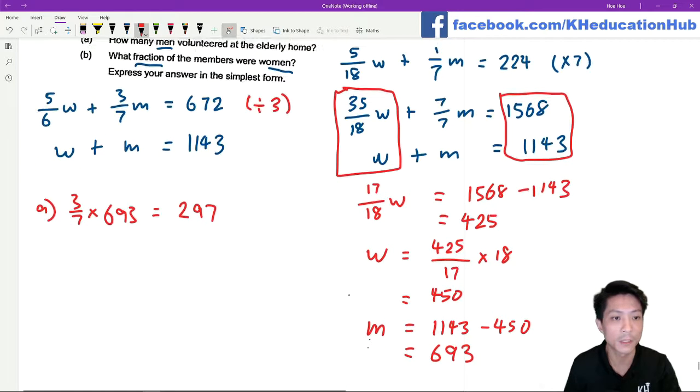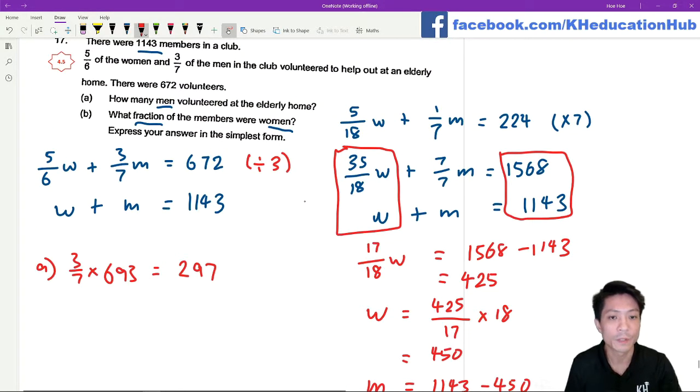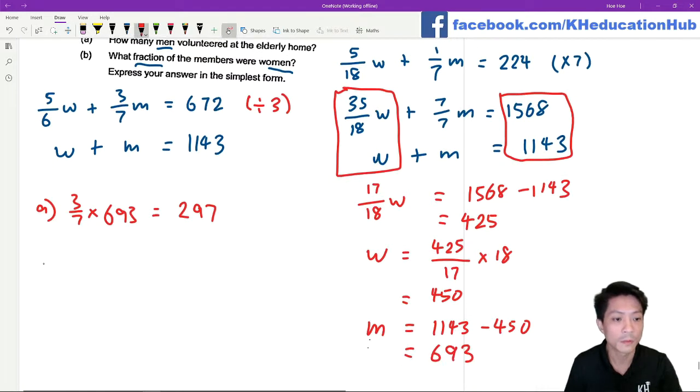For part B, what fraction of the members are women? We've already found that the total number of women is 450 over the total members which is 1143. Change it to simplest form, it's gonna give me 50 over 127.